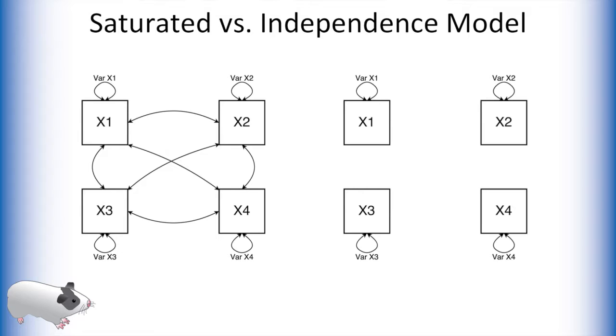On the right we have what is known as an independence model of the same data. This model assumes that there is exactly zero relationship between the variables in our data set. While this model is parsimonious, it is not very likely.